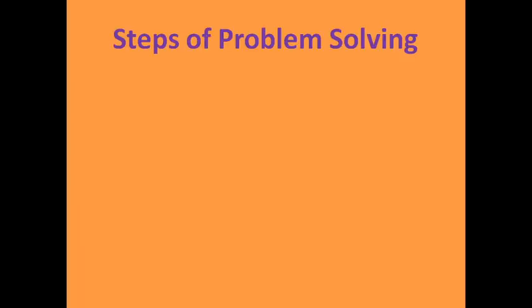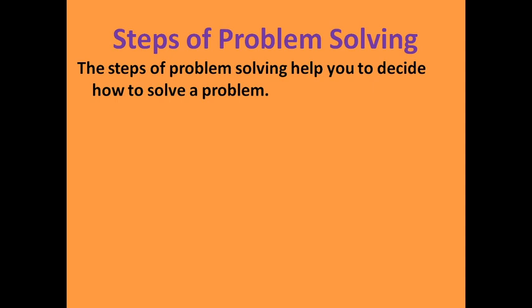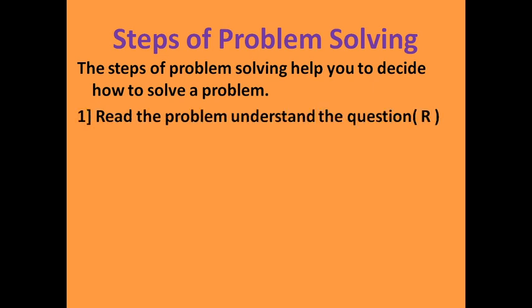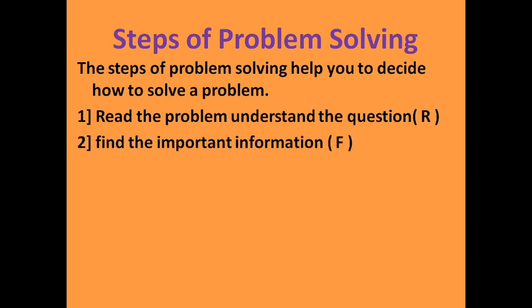Steps of problem solving: the steps of problem solving help you decide how to solve a problem. The first step is to read the problem to understand the question — we read it, which means we write R. Then we find the important information, marked F. After reading the problem, we find the important information, and from this information we can solve our problem.